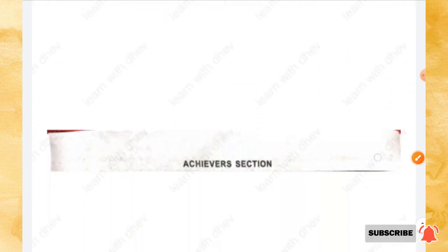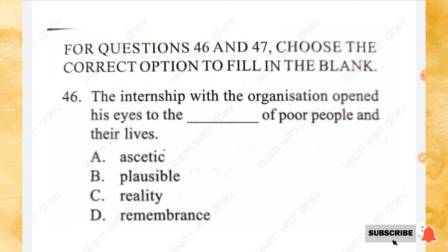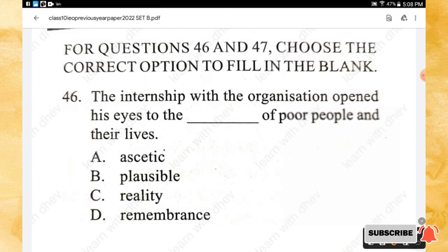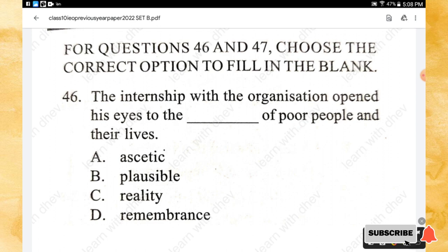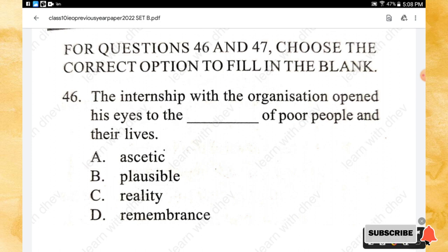The last section is the Achiever Section. For questions 46 and 47, choose the correct option to fill in the blank. Question 46: The internship with the organization opened his eyes to the _____ of poor people and their lives. Options: ascetic, plausible, reality, remembrance. The right answer is option C — reality.